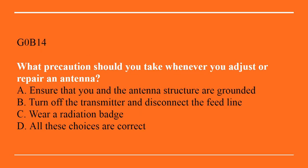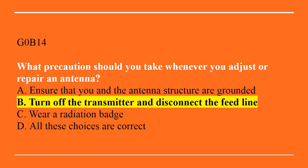G0B14: What precaution should you take whenever you adjust or repair an antenna? A, ensure that you and the antenna structure are grounded. B, turn off the transmitter and disconnect the feed lines. C, wear a radiation badge. Or D, all of these choices are correct. Correct answer is B — turn off the transmitter and disconnect the feed line.